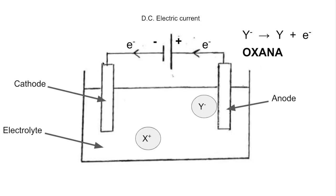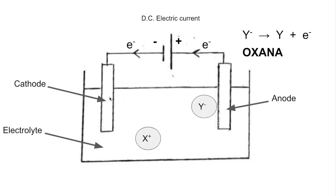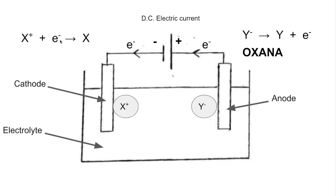The electron ends up at the cathode, where the X plus ion is attracted. It's going to pick those electrons up, so the X plus ion gains an electron and becomes X. It's still being discharged — it's losing its charge by gaining the electron. Remember Red Cat: reduction takes place at the cathode.